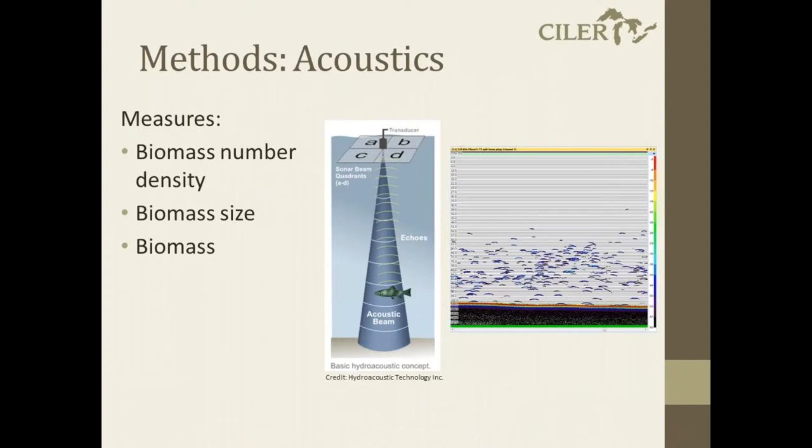So I'll talk about each of those, the acoustics and then the plankton survey system data. First, the acoustics. Basically, at the bottom of the boat, we have a transducer that sends out acoustic pulses, and depending on what is reflected back in the water column, that gives us information on biomass number density, so how much of what we're seeing is in the water column. Biomass size, so what we see, how large is it? And then combining those together, getting an overall idea of biomass, so a grams per meter cube or something like that for what is in the water column.